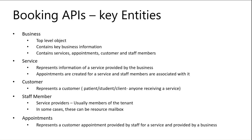Let me walk you through how Bookings is structured. There are five key entities. The most important top-level object is the Business object, which contains all the business information — things like your website, policies, working hours, and compliance-related information. Each business can provide various services. For example, a salon provides haircuts or facials, and a healthcare clinic can have one-on-one consultations or procedures like COVID testing.